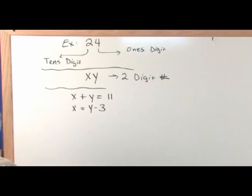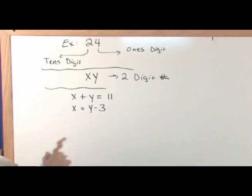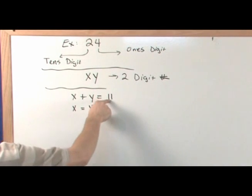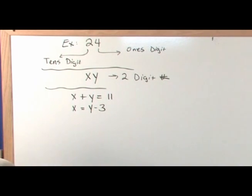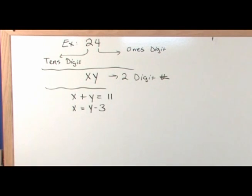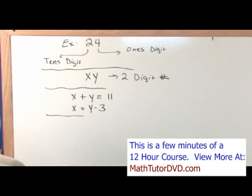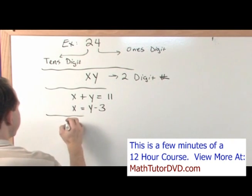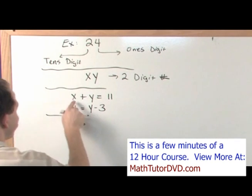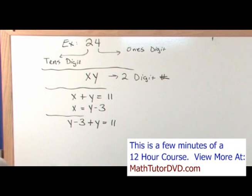Now I have two equations and two unknowns and I can solve them. The sum of the two digits equals 11, and the tens digit is three less than the ones digit. Let's plug x in: substituting x equals y minus three into the first equation gives us y minus three plus y equals 11.